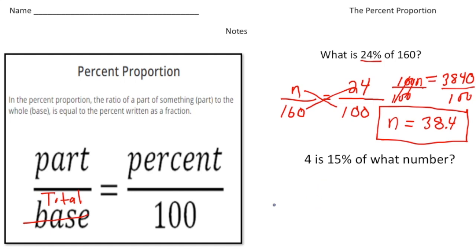So again, let's set up our proportion. Again, we always know 100 is on the bottom right-hand corner, and they gave us the percent, right? 15%. So 15 is going to go where the percent is, which is above the 100. But this time the 4 is only the part, right? Because it says 4 is 15% of what number?